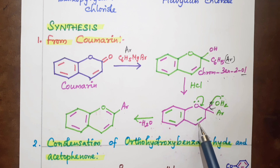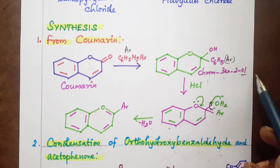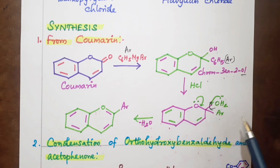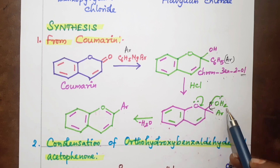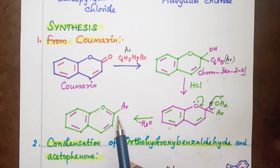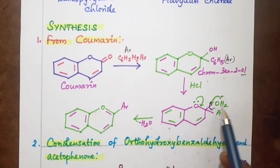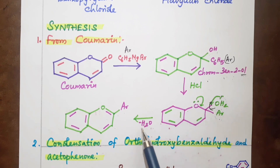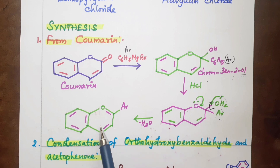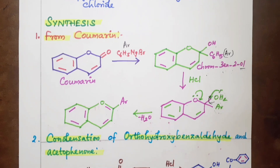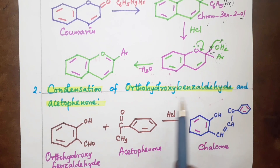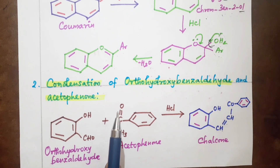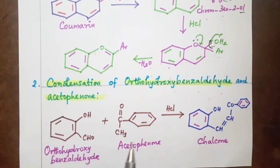This compound is chromen-3-2-ol with an OH group, reacting with HCl. The benzene ring joins with the pyrylium ring; an aryl group is present along with OH and OH2. A water molecule is lost during this process. This is essentially a condensation of O-hydroxybenzaldehyde and acetophenone.